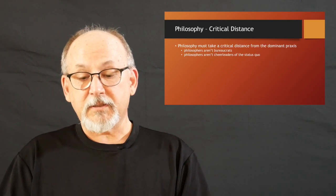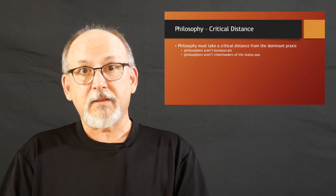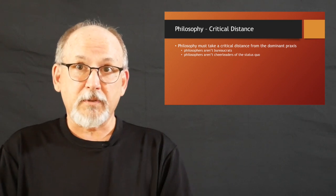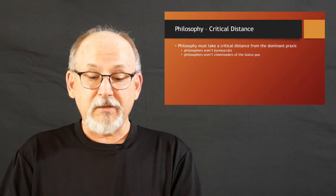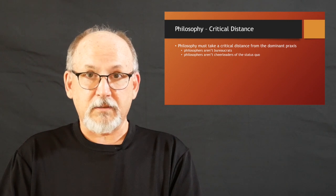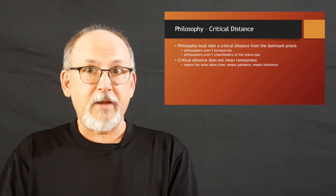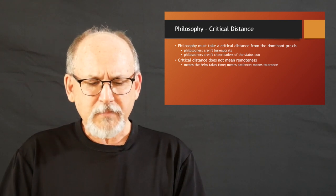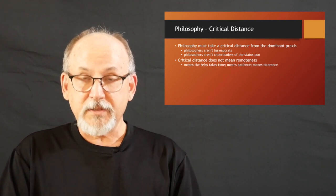Philosophy must take a critical distance from the dominant praxis. In order to do philosophy, you have to be able to take a step back from what's going on. Philosophers, he says, aren't bureaucrats. We're not checking the papers of the citizens of the ruling ideology. And philosophers aren't cheerleaders for the status quo. It's not our job to prop up what people are doing now without question. That's not our job as philosophers. But critical distance doesn't mean remoteness, where you step away from society and turn your back on society or just imagine you get out from under it. That can't happen. He says, what it means is the telos, so the end or aim or goal of philosophy, wisdom, takes time. It means you have to have patience. It means you have to have tolerance.